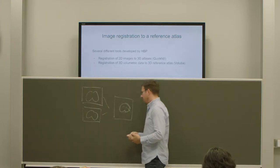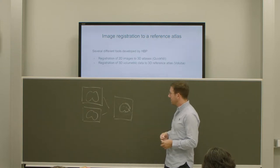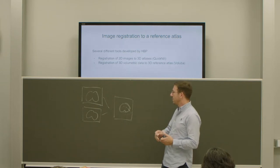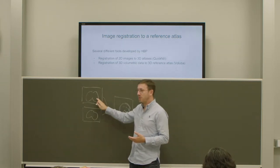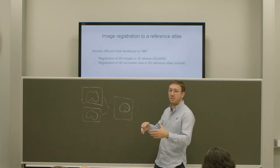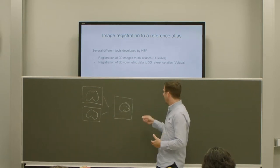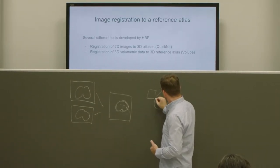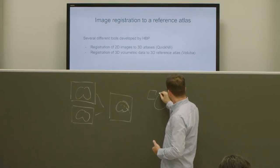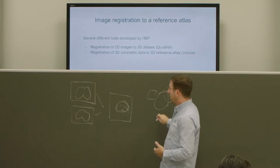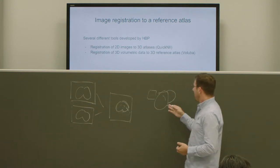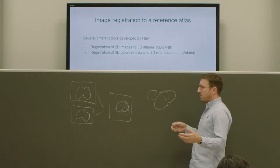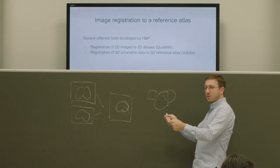There are many different cases of this problem. The first we will look at is in a rodent brain — the case where you have a 2D image and you want to position it in a 3D space, to anchor it to the atlas. That means you have a 3D volume and you want to find the position where the 2D image fits. In the rodent brain, you can do this quite well by moving, rotating, and shearing the image a little.